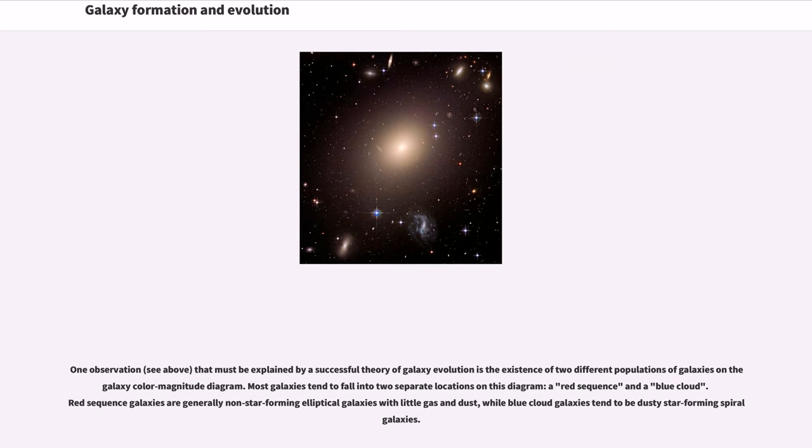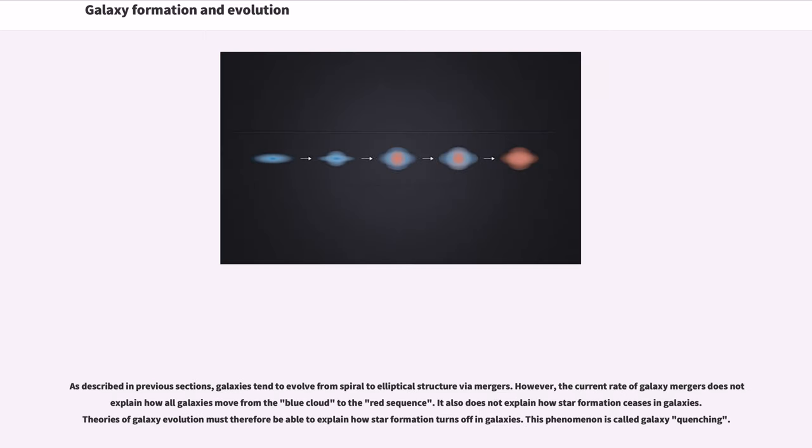One observation that must be explained by a successful theory of galaxy evolution is the existence of two different populations of galaxies on the galaxy color-magnitude diagram. Most galaxies tend to fall into two separate locations on this diagram: a red sequence and a blue cloud. Red sequence galaxies are generally non-star-forming elliptical galaxies with little gas and dust, while blue cloud galaxies tend to be dusty star-forming spiral galaxies. As described in previous sections, galaxies tend to evolve from spiral to elliptical structure via mergers.